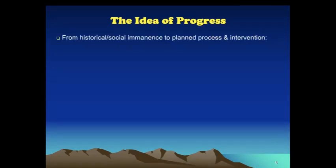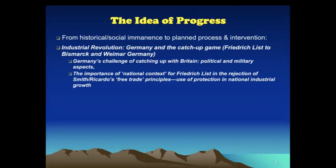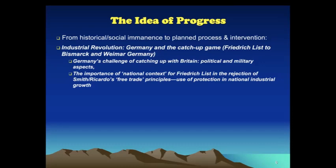Between the 19th and 20th centuries, the idea of progress took on the form of an outcome of deliberate planned process and intervention rather than a naturally occurring process. Two illustrative cases are the industrialization project in Germany in the 19th century and the project of mitigating the boom-and-bust cycles of capitalism under the rubrics advanced by John Maynard Keynes. Industrialization in Germany from 1870 was concerned with catch-up with Britain, involving deliberate state intervention and policies. The German economist Friedrich List counselled his country against free-market ideas, advocating instead the use of tariffs to protect local industry.